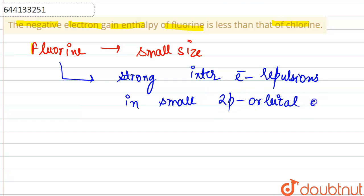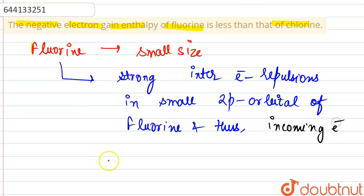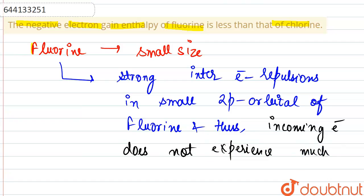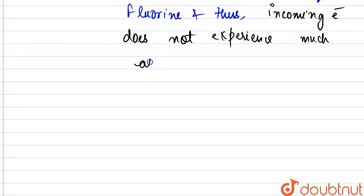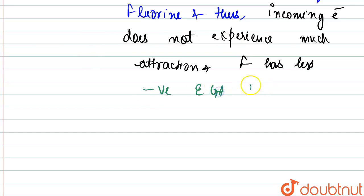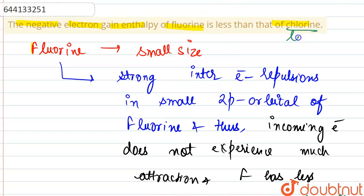In the compact 2p orbital of fluorine, the incoming electron does not experience much attraction. Therefore, fluorine has less negative electron gain enthalpy than chlorine, which has a larger size.